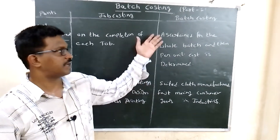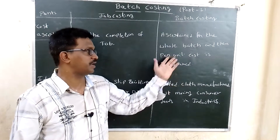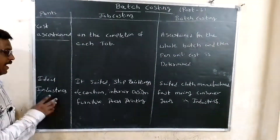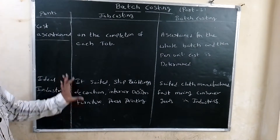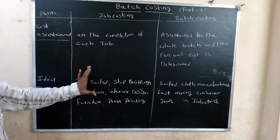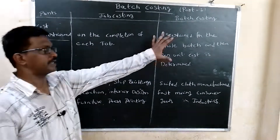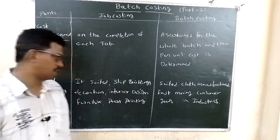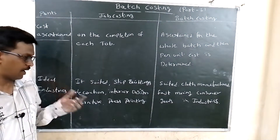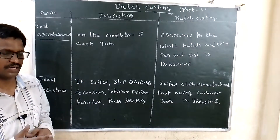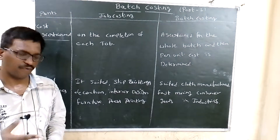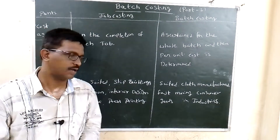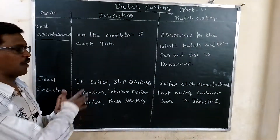Industries suitable for job costing include shipbuilding, interior decoration, furniture manufacturing, and printing press industries.